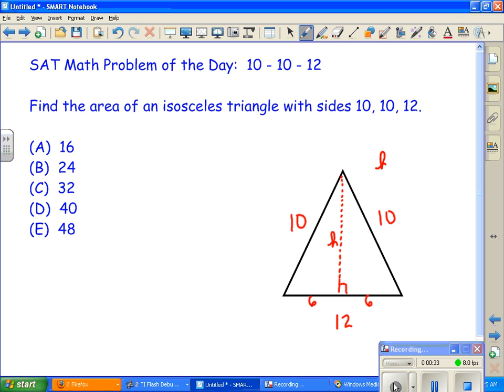We know that h squared plus 6 squared is equal to 10 squared. So h squared would be 10 squared minus 6 squared. So h would be the square root of 100 minus 36, 64. So that would be 8. So the height is 8.